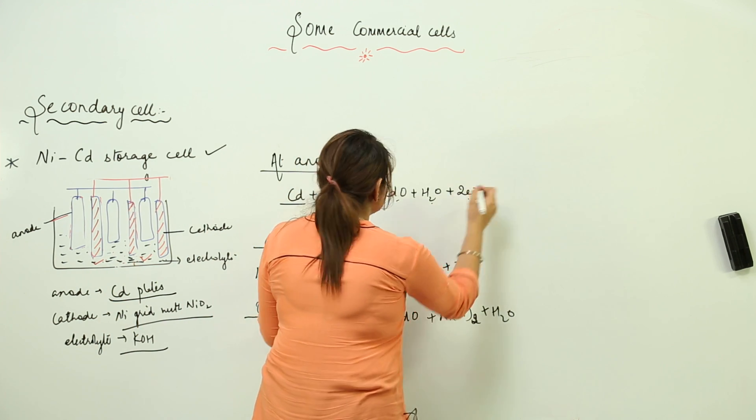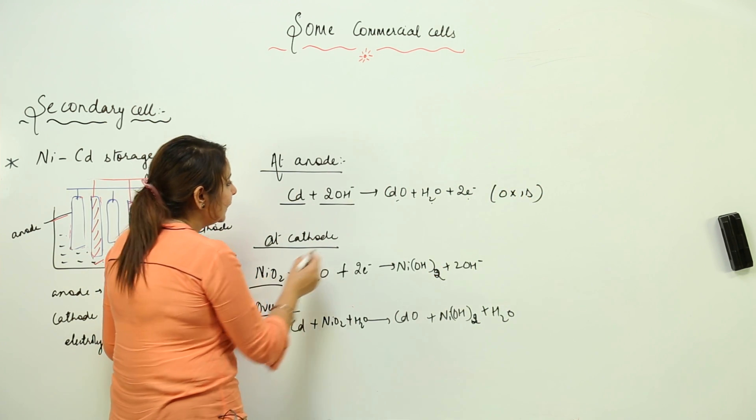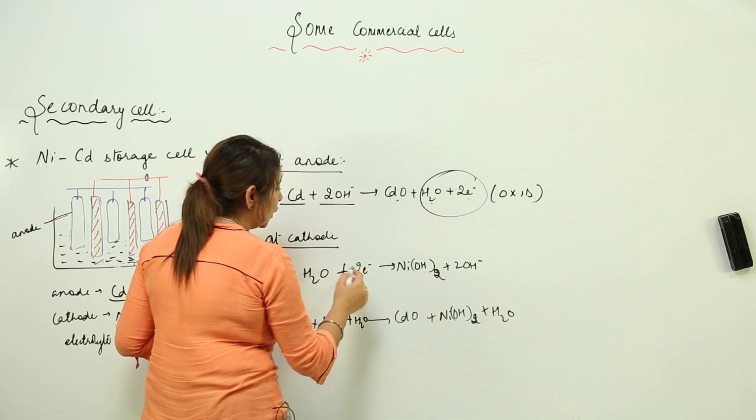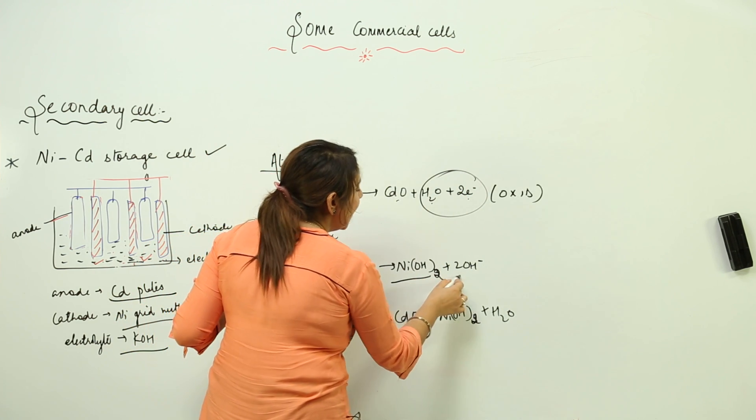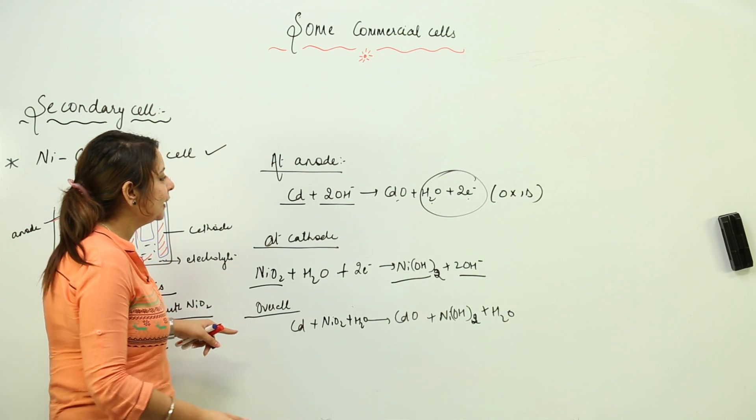At the cathode, nickel oxide combines with H2O and two electrons, giving rise to nickel hydroxide and two OH negative ions. These compounds which are formed remain in the solution.